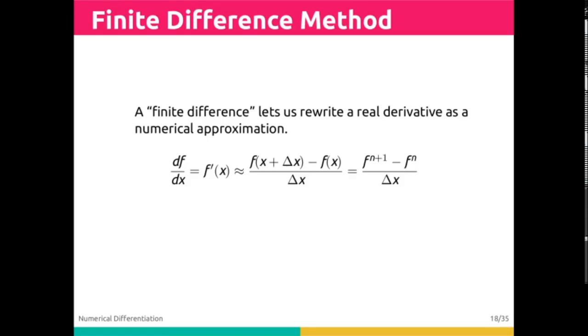Since the derivative has a formal mathematical definition involving an infinitesimal limit, what happens if we take delta x to be very small but not actually going to zero? In that case, we would call this a finite difference.